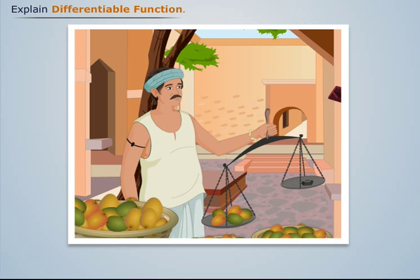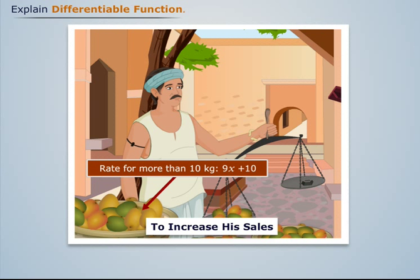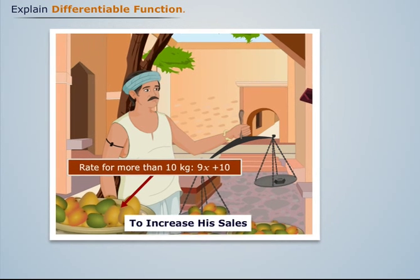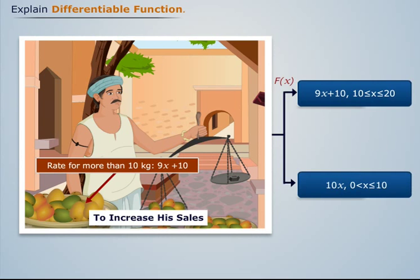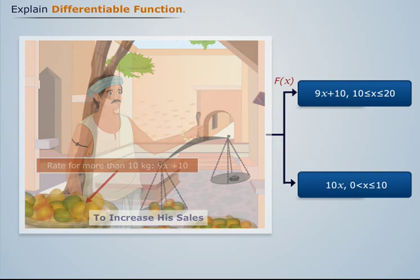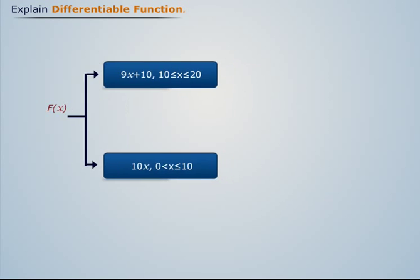Now let's assume that to increase the sale, the shopkeeper gives an offer: if a customer purchases more than 10 kgs of mangoes, the rate gets reduced to rupees 9 per kg. Thus we get a new piecewise function. Let us plot this function on the graph.